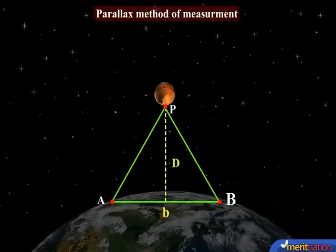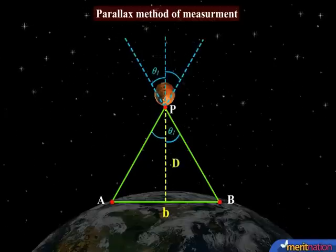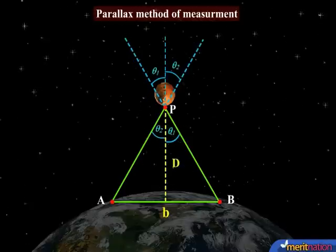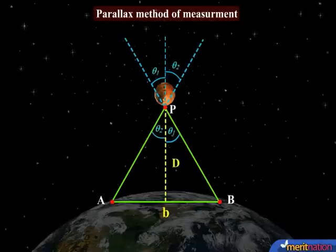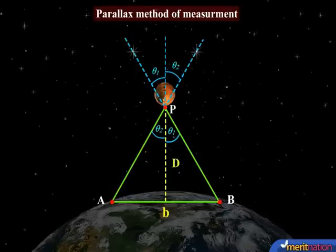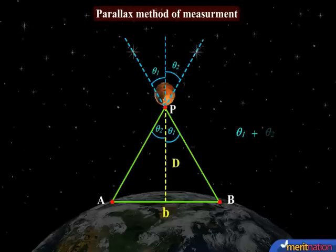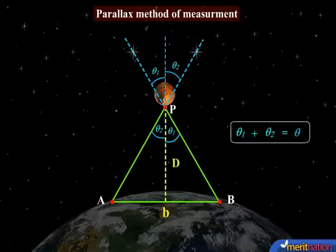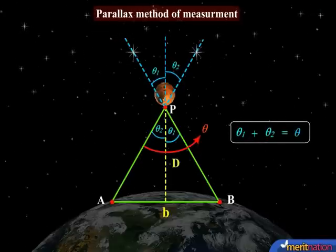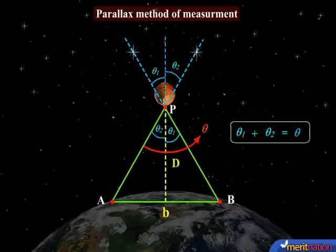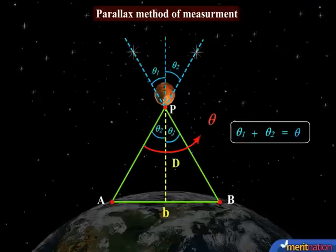From A and B, the parallaxes theta1 and theta2 of the planet with respect to some distant star are also measured. Using the values of theta1 and theta2, we have the total parallax subtended by the planet P on Earth as theta.